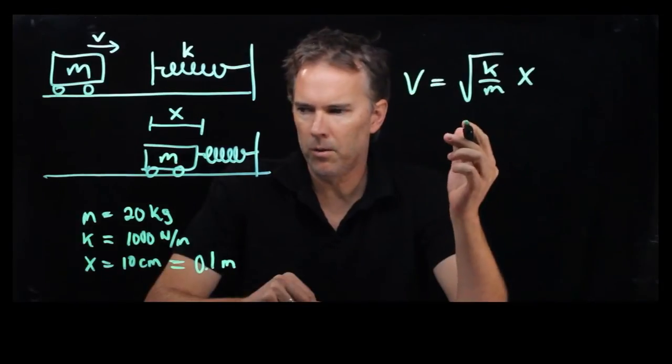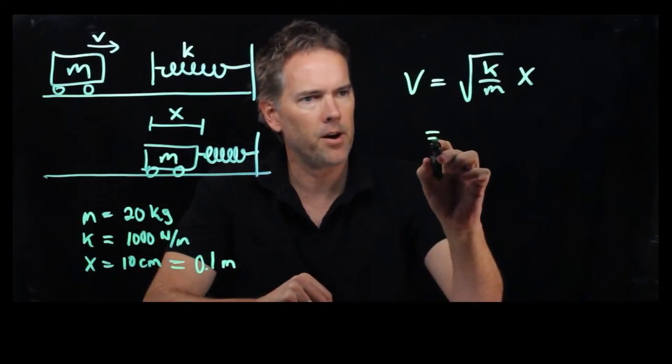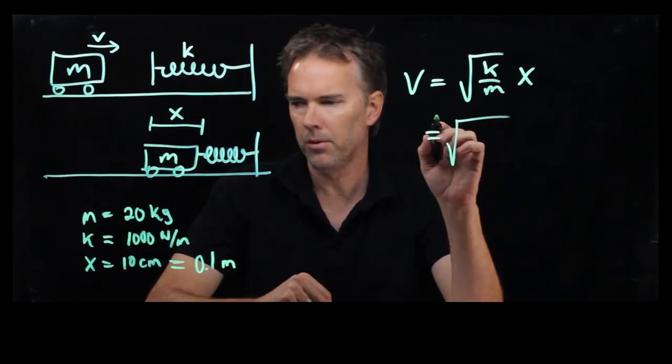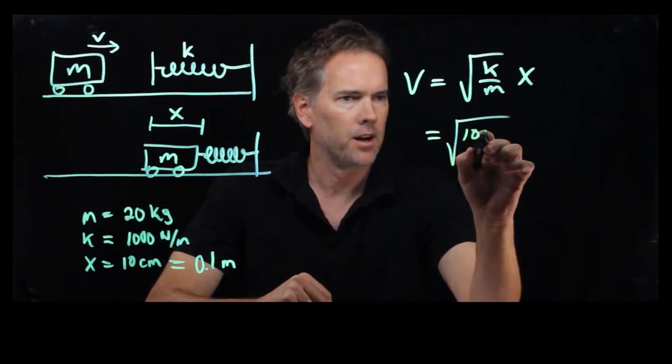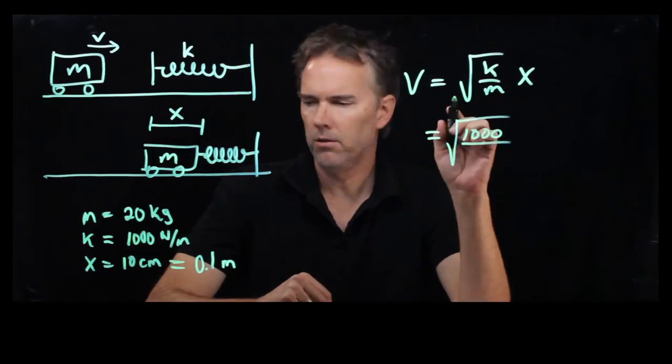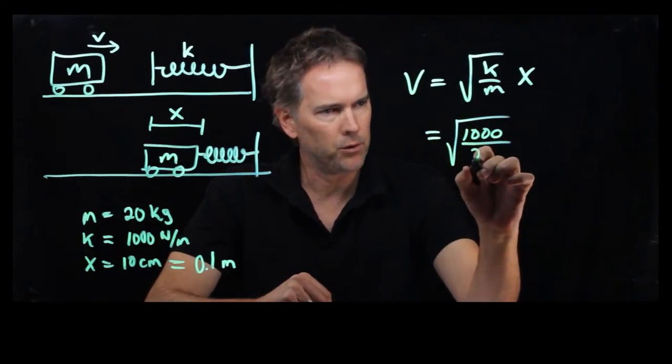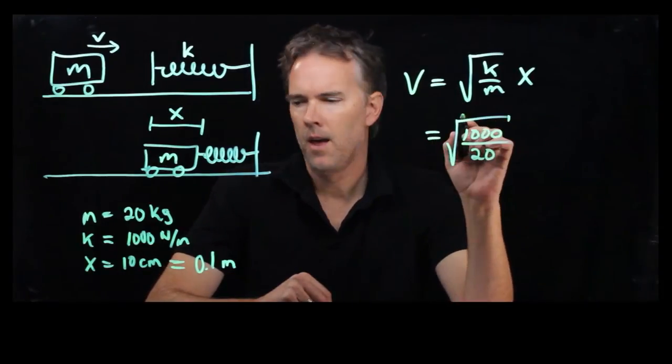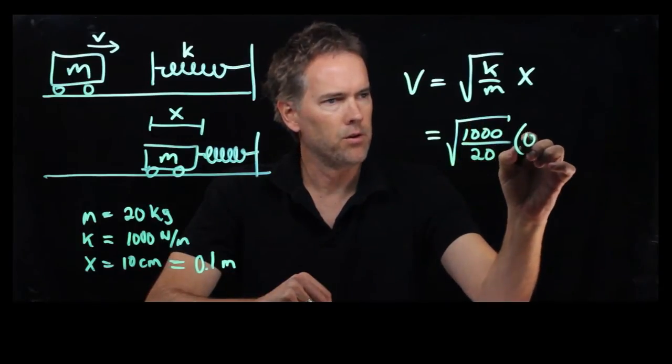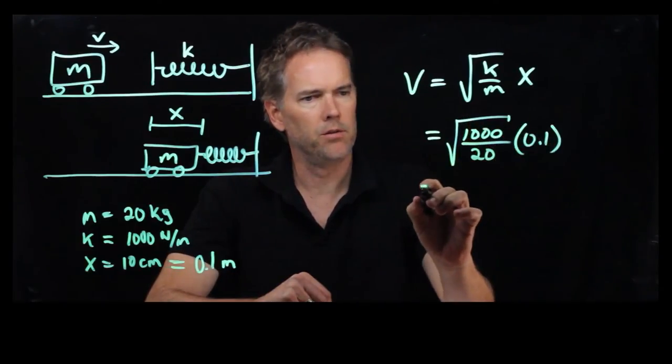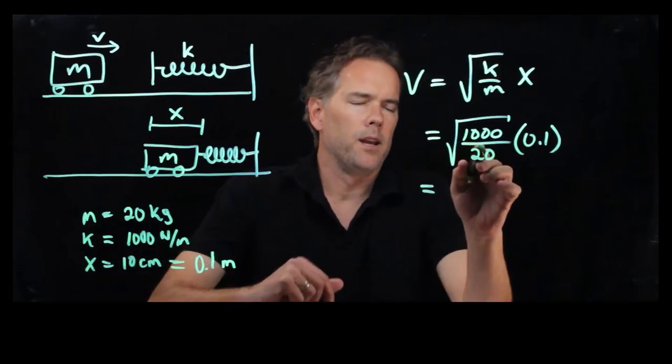And now let's plug it into v and see what we get. OK, what we said was v was square root of k over m times x. We now have all those numbers. We can plug it in SI units, so we don't have to write down the units every time. k is 1,000. m, we said, was 20 kilograms. x is 0.1 meters.